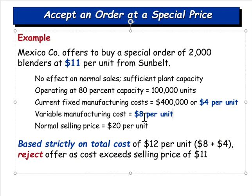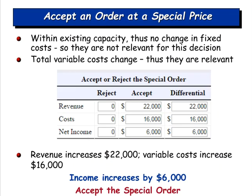We don't have to worry about covering fixed costs as long as we cover the incremental cost of manufacturing those 2,000 blenders. Since $11 exceeds our variable cost of $8, we should accept the special order. If we reject, we make no additional income. If we accept, revenues increase by $22,000, costs go up by $16,000 (variable cost of $8 × 2,000 units), adding $6,000 of net income. So we accept.